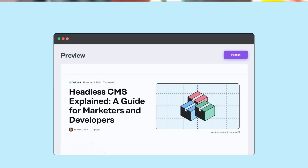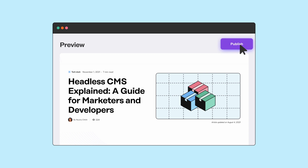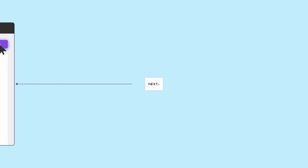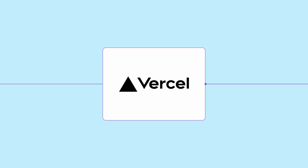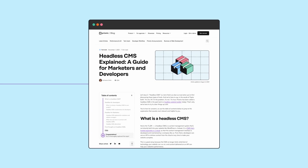A Headless CMS is the SaaS product that developers set up and connect to these custom-built sites. It becomes the place where content teams create, change, or delete content. When content changes are made in the Headless CMS, it triggers an update to the website, making sure these changes are displayed to visitors within seconds.